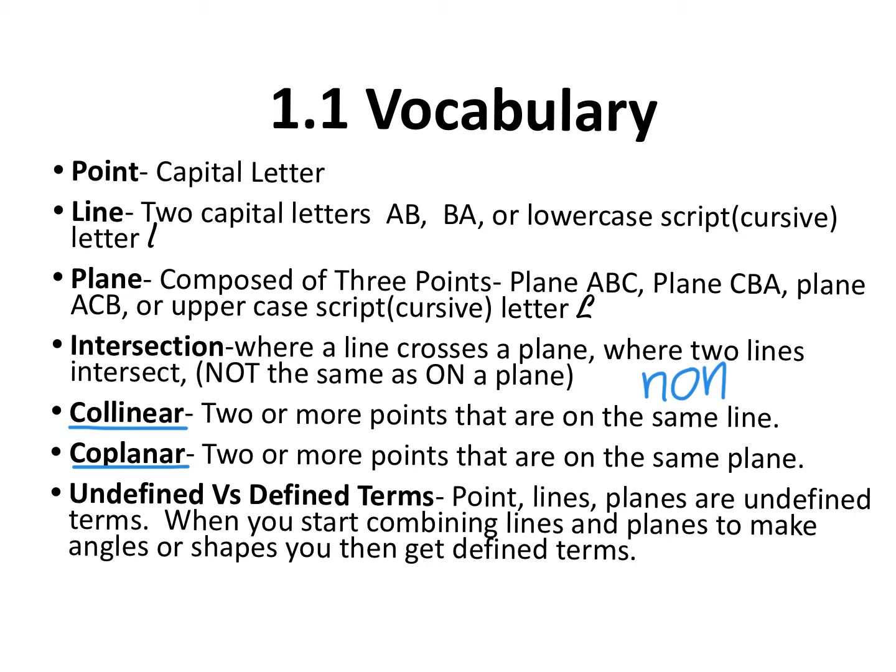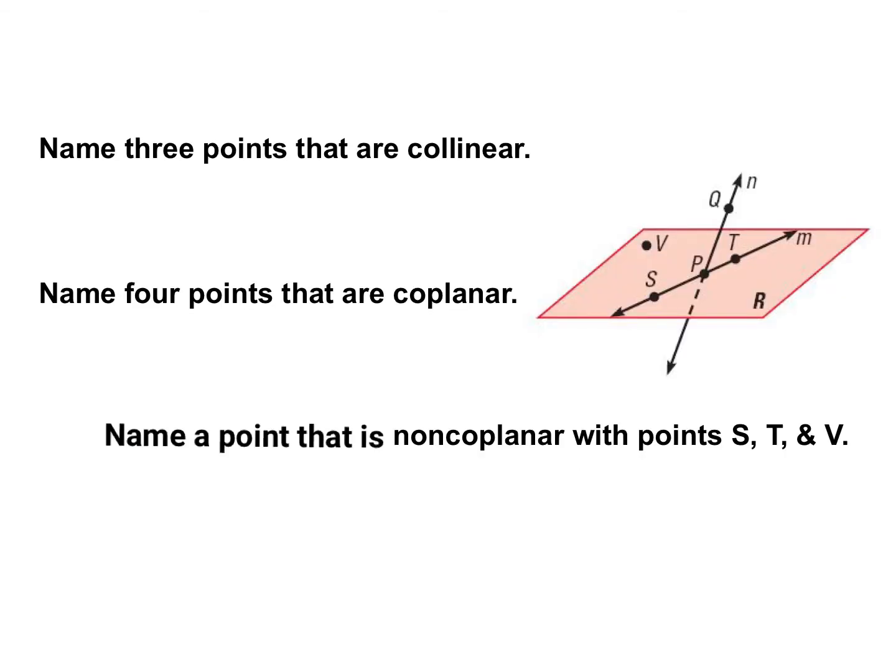So let's do some examples. Here we have a diagram on the right that we're going to be using to answer these three questions. And again, feel free to go back and refer to the vocabulary words if you're struggling with what they mean. But in this first scenario, we have collinear. Name three points that are collinear. So they are on the same line.